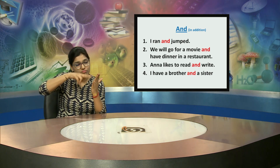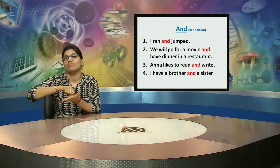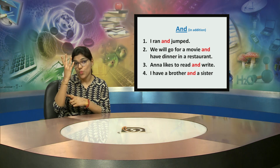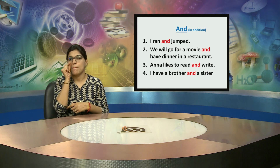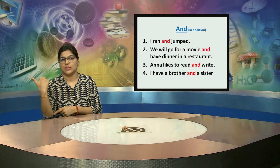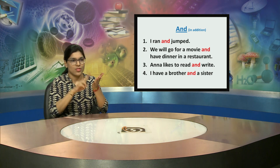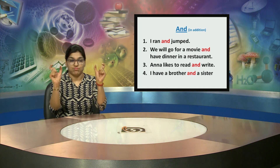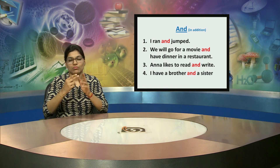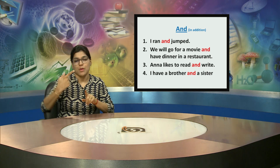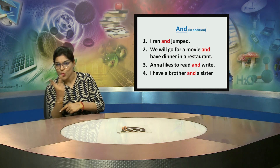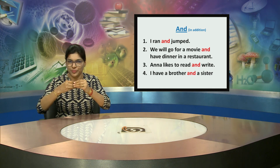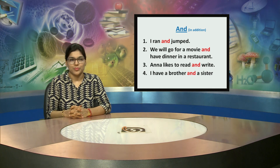In the third sentence: Amma likes to read and write. In both parts, 'read' and 'write' are connected by AND. Fourth sentence: I have a brother and a sister. Both are nouns connected by the word AND. I have shown all the sentences in which AND has been used as a connecting word.